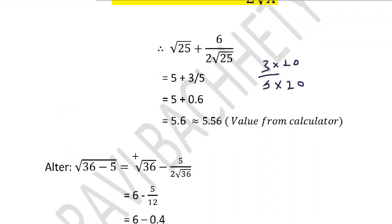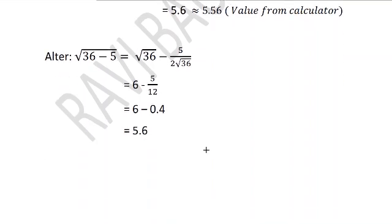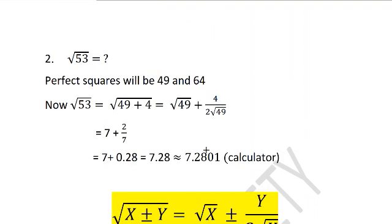One more example we take: √53 we want to find. First step is finding a perfect square which is just smaller than 53 and it is 49. 7 square is 49 and 8 square is 64. So if we take the smaller number it is 49. So √53 can be written as √49 + 4. And now applying the formula: √X + Y upon twice of this X, twice of the X.